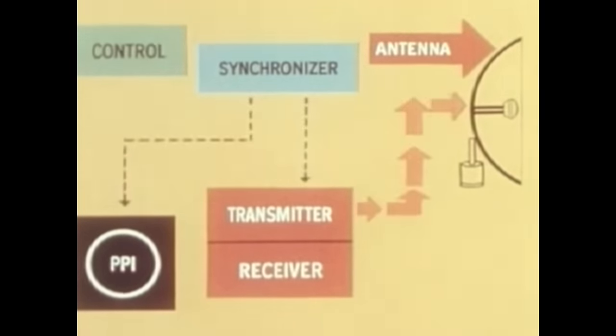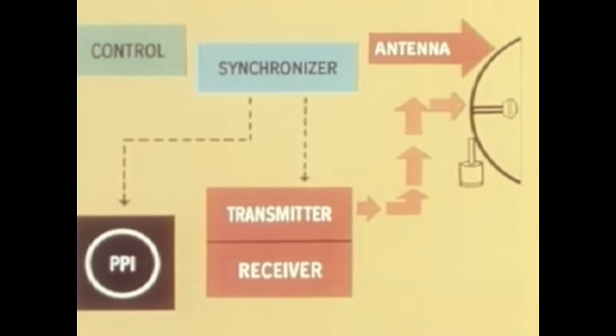The transmitter in turn sends a short pulse of radio energy to the antenna. This pulse travels from the antenna along a narrow beam at microwave speed. The round trip to an object 150 miles away takes less than one five-hundredth of a single second.